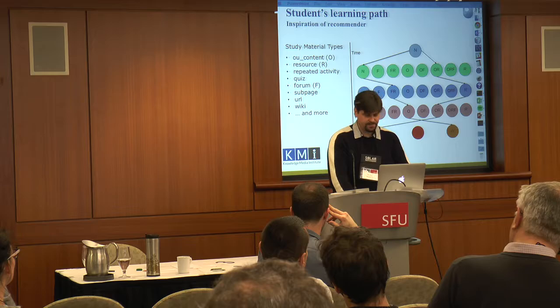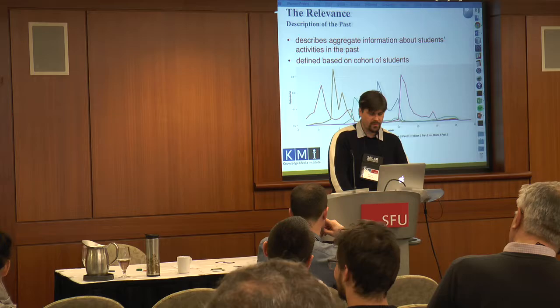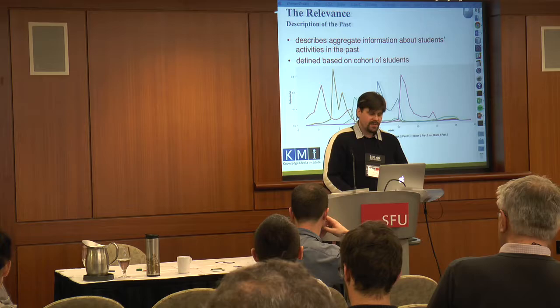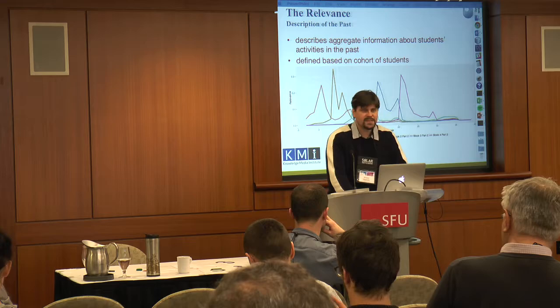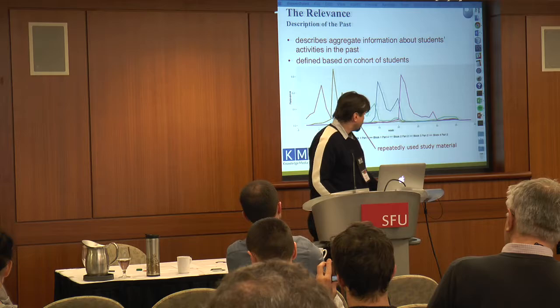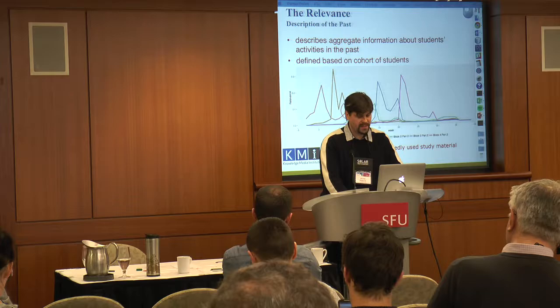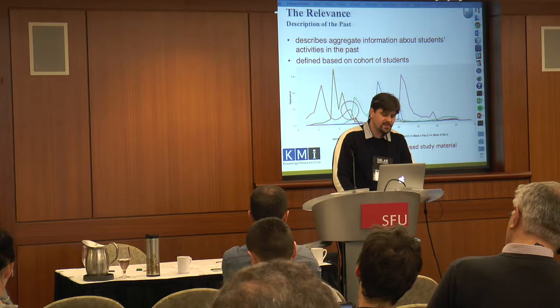So let me introduce the first measure which we proposed. This is called RELANCE, and this measure describes aggregate information about student activity in the past, and is defined for some specific cohort of students. As you can see, for example in the first red relevance, the higher relevance for this study material is in week one, because this study material is assigned for week one. But what is more important, there is a second peak of relevance in weeks seven and eight, which means that the students use this material repeatedly. This can be very useful because we can suppose there is some reason for which the students study the material again.